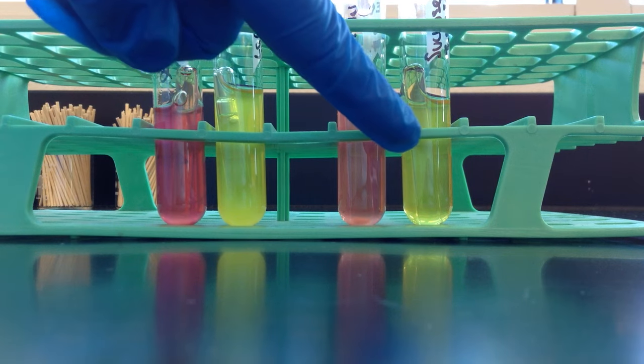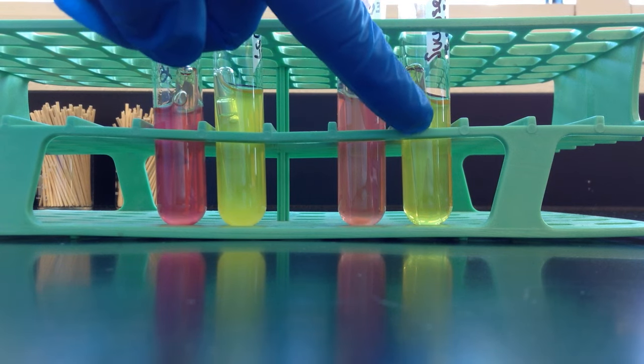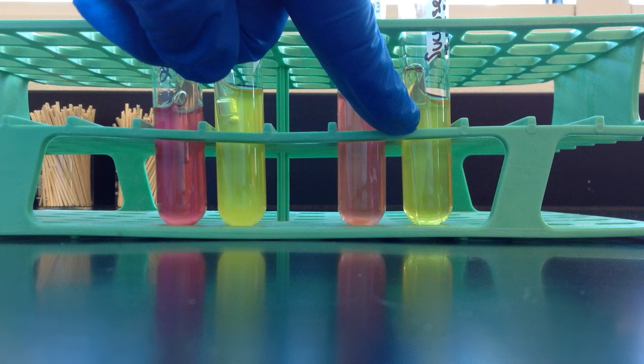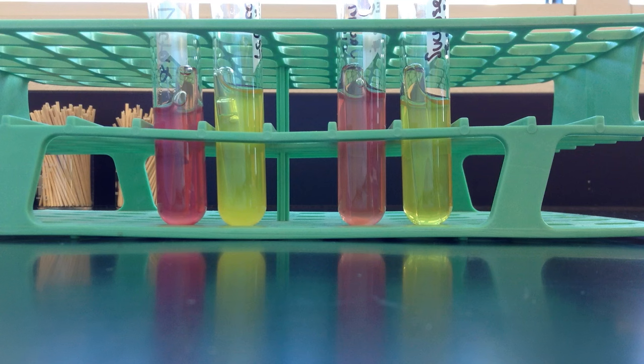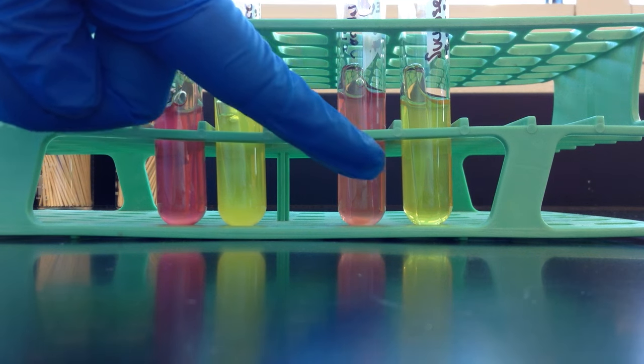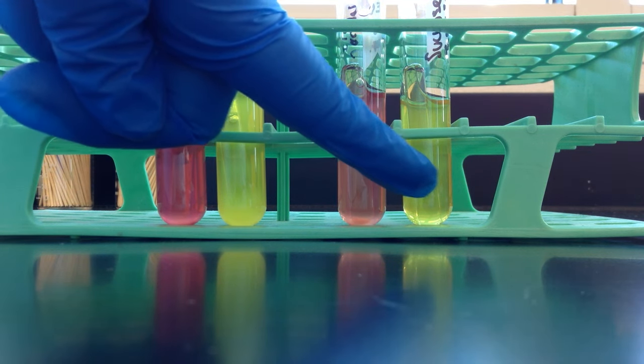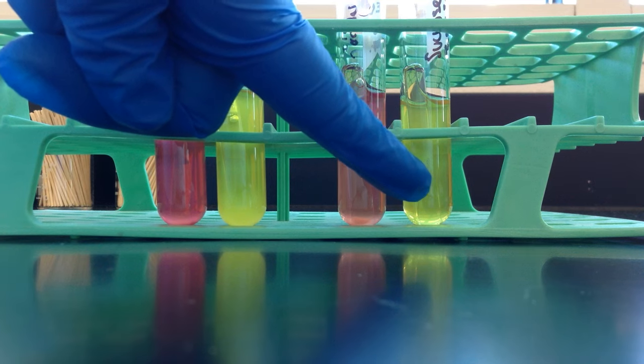So the yellow product indicates acid production. Phenol red, which is our indicator, turns yellow. So in this case, since sucrose is a simple sugar that's used, we can say that the organism is positive for the fermentation of sucrose, or we can say has the sucrase enzyme.